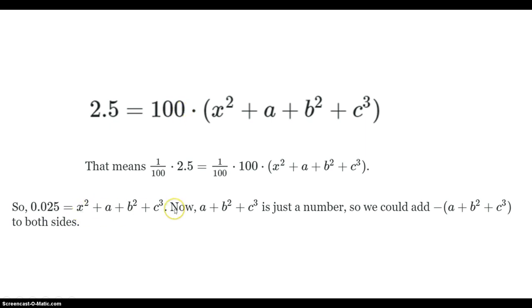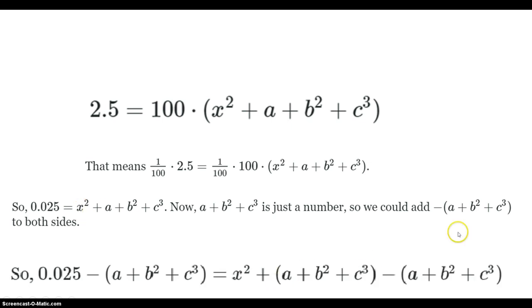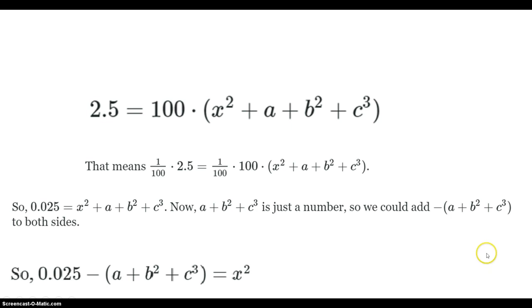Now we're looking at this term on the right — it's just some number. We can add that term to both sides of the equation to isolate x-squared. I put parentheses around it just to denote it's some number. We add it to both sides, and on the right those terms just cancel and become zero — so that goes away.